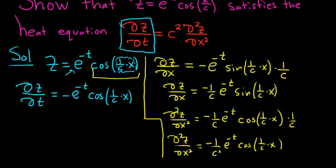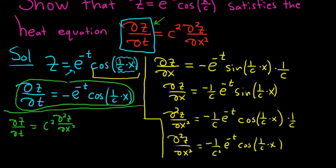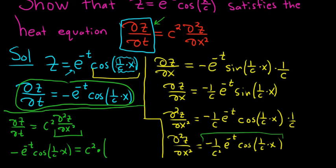Now we'll go ahead and do the verification. Writing down the heat equation again: del z, del t equals c squared times the second derivative of z with respect to x. The left-hand side is negative e to the negative t cosine of 1 over c times x. Plugging in the right-hand side: c squared times negative 1 over c squared times e to the negative t cosine of 1 over c times x. The c squared terms cancel, and we get exactly the same thing, so everything has been verified.